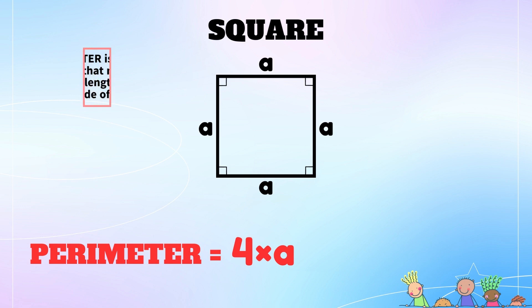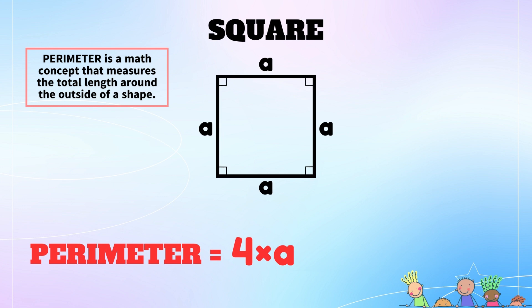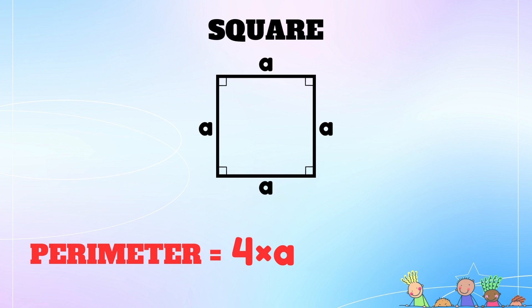Square. To calculate the perimeter of a square, you simply add all sides together. Since all sides of the square are of equal length, we can simply write it as 4 times a, a representing the length of one side of the square.